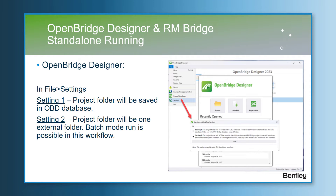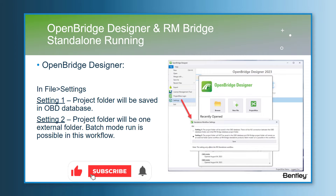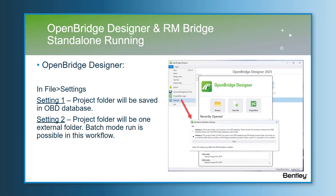In OBD file settings, the user has two options for specifying the type of run they want to perform. With setting one, the bridge project folder is saved in the OBD database. With this option, the user can choose between one BIM workflow and one standalone workflow, but all the bridge project information will be saved in the OBD X file.